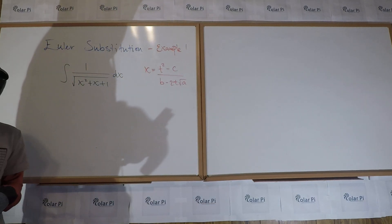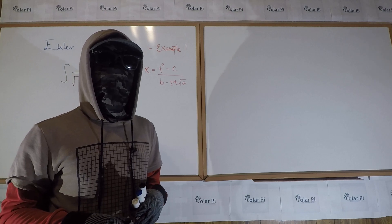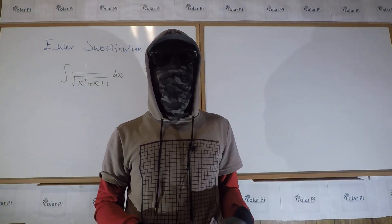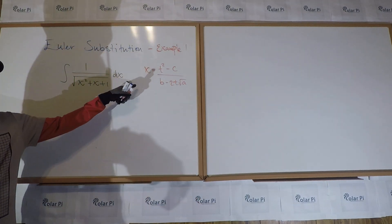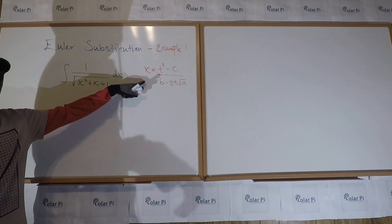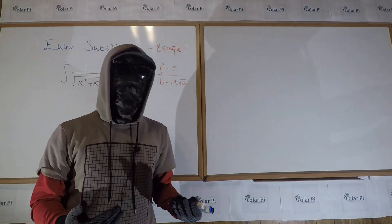We also said in example zero that anytime you're given a problem, you shouldn't reinvent the wheel and do all over again the things we did in example zero. We should just start with the formulas that we came up for X in terms of T and each Euler substitution.